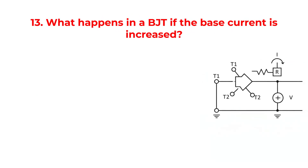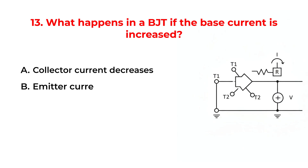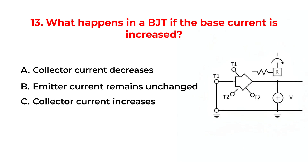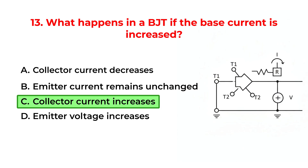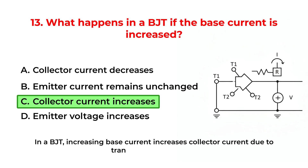What happens in a BJT if the base current is increased? A. Collector current decreases. B. Emitter current remains unchanged. C. Collector current increases. D. Emitter voltage increases. The correct answer is Option C: Collector current increases. In a BJT, increasing base current increases collector current due to transistor amplification.